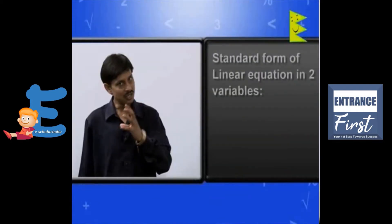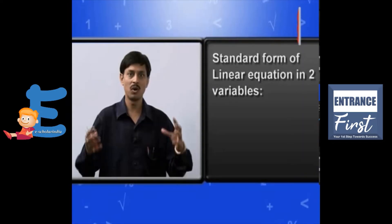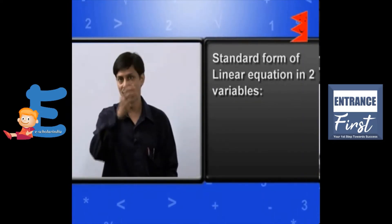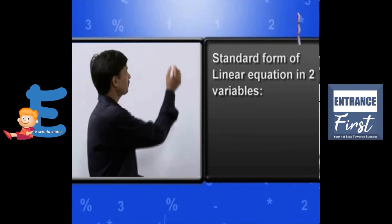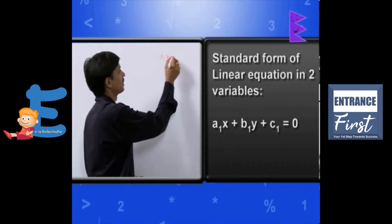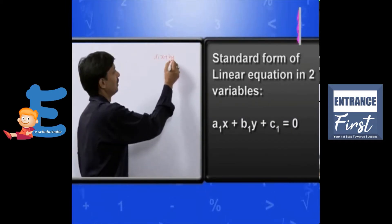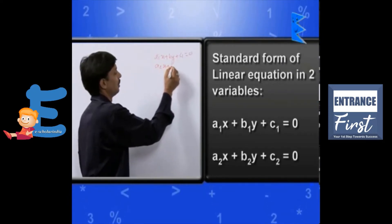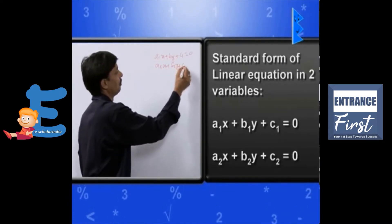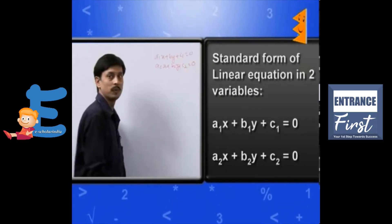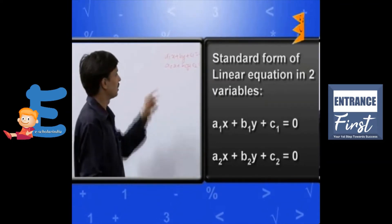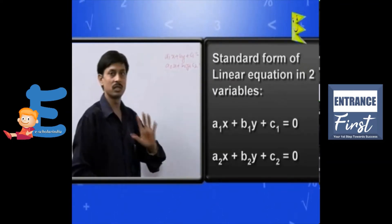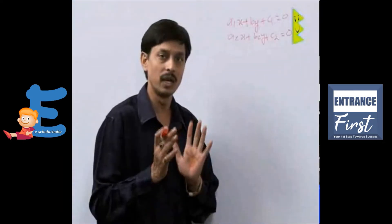So, first of all, I am going to tell you what is the standard form of the system of linear equations in two variables. It is like this: a1x plus b1y plus c1 equals 0, a2x plus b2y plus c2 equals 0. This is the system of linear equations in two variables standard form.